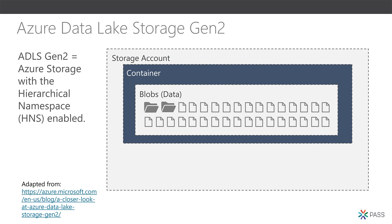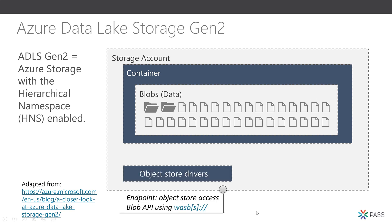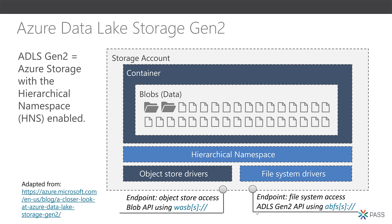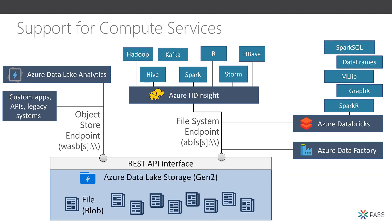To recap: Gen 2 is based on Azure Storage. We have the same object store drivers and access points we've had in the past. The new pieces introduced are the file system endpoint and a hierarchical namespace, which allows us to unify the data lake story on Azure and no longer makes it an either-or decision. This lets us take advantage of the best of both feature sets. In terms of support for compute services, the file system endpoint is currently supported by HDInsight, Databricks, and Azure Data Factory.